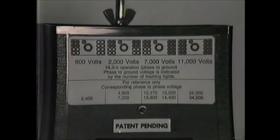The label supplied with the HLS 5 indicates the voltage levels for each one of the banks of lights. It also lists for reference purposes the corresponding system voltages. The HLS 5 comes complete with a carrying case, instructions, and a battery. The battery is a common 9-volt alkaline battery and is easily replaceable.